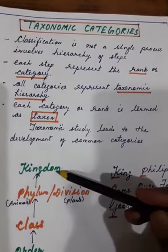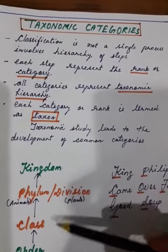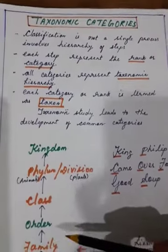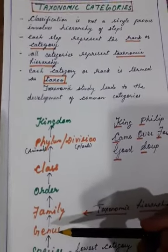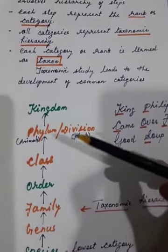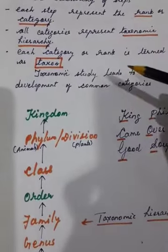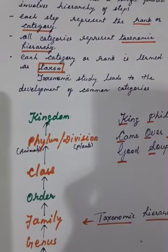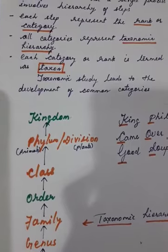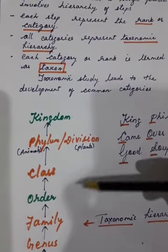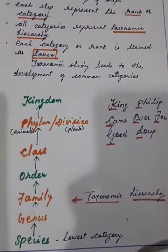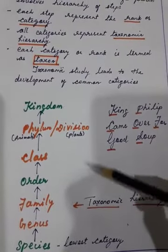Kingdom is a taxon, phylum is a taxon, class is a taxon, order is a taxon, family is a taxon, genus is a taxon, and species is a taxon. Taxonomic study leads to the development of common categories. The taxonomic hierarchy is shown in ascending order.